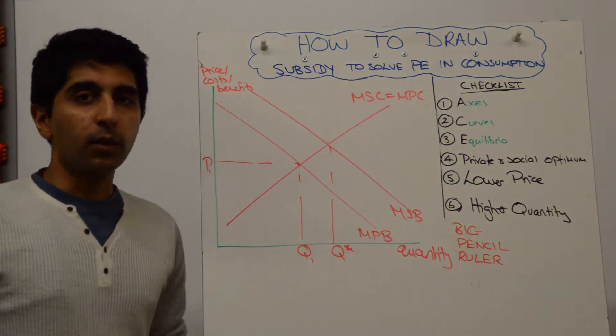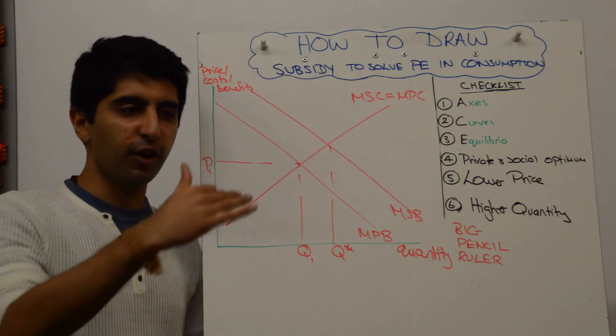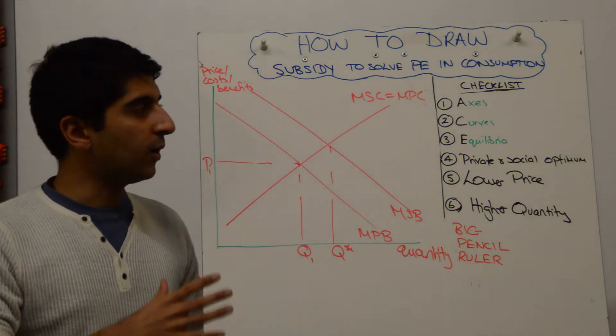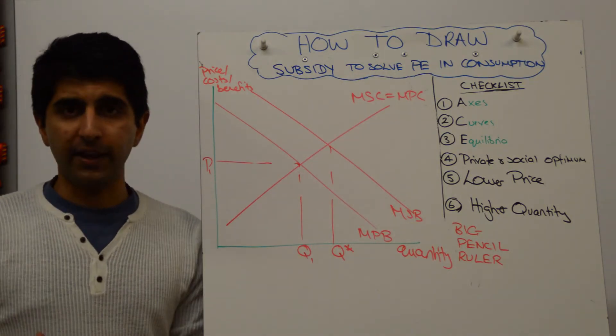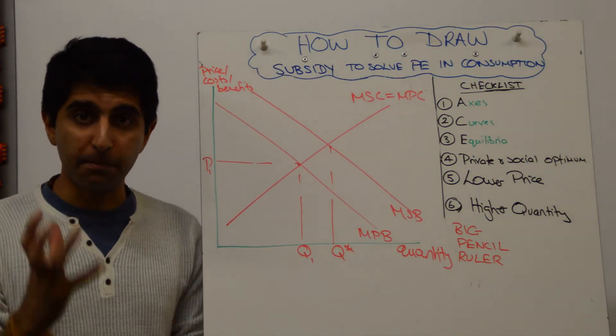It's a subsidy. What does a subsidy do? It lowers costs of production for businesses - it shifts the marginal private cost curve downwards. We're going to assume in this video that the subsidy is perfect. The subsidy gets the market back to the socially optimum quantity perfectly.